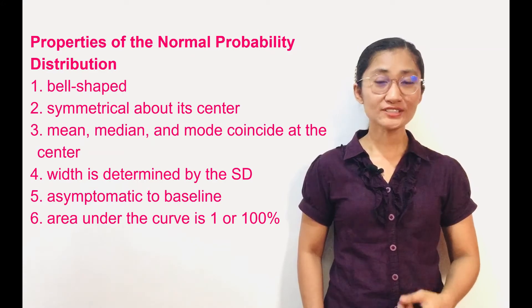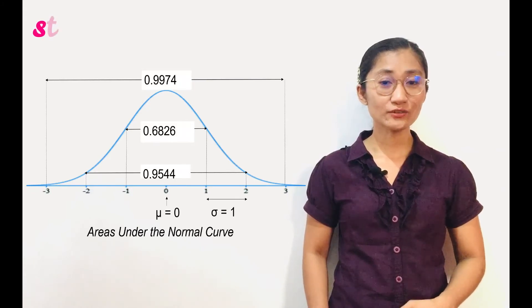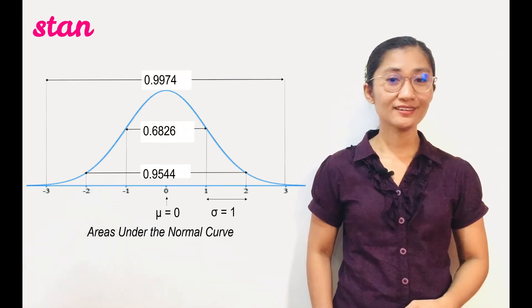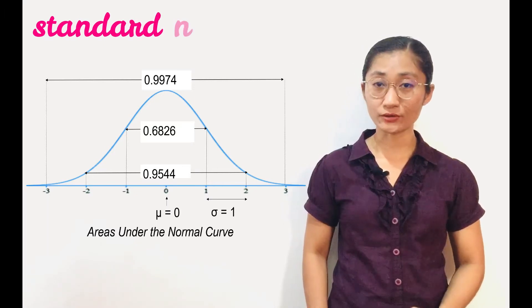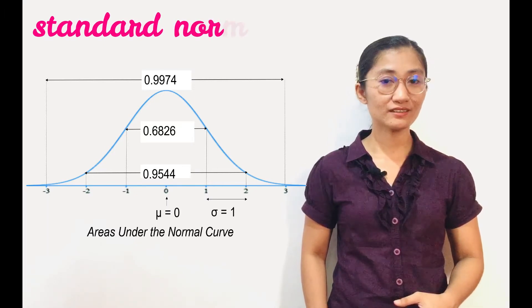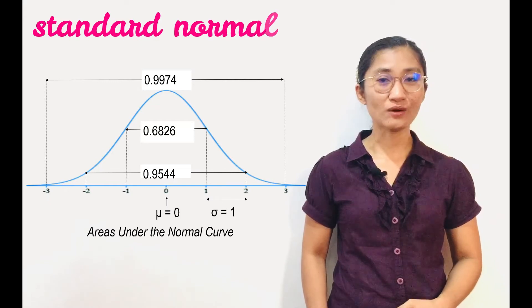Moreover, there is a so-called standard among the normal curves. The standard normal curve is a normal probability distribution that has a population mean mu equals 0 and the population standard deviation sigma equals 1.